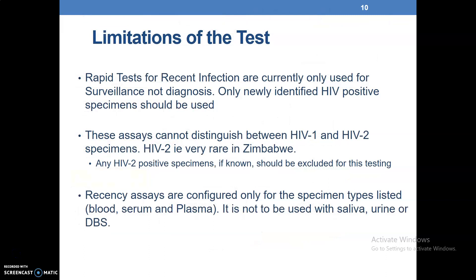Limitations of the test: Rapid tests for recent infections are currently only used for surveillance, not diagnosis, because they have not been WHO pre-qualified. Only newly identified HIV-positive specimens should be used. These assays cannot distinguish between HIV-1 and HIV-2 specimens; HIV-2 is very rare in Zimbabwe, and any HIV-2 positive specimens should be excluded. Recent assays are configured only for blood, serum, and plasma — not saliva, urine, or DBS.